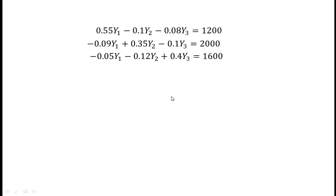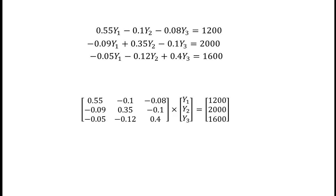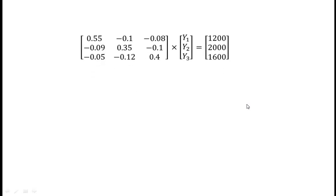These three equations can be expressed in matrix form, where A is the coefficient matrix of Y1, Y2, and Y3, and this is the constant vector. Using Cramer's rule, we get equilibrium value of Y1...